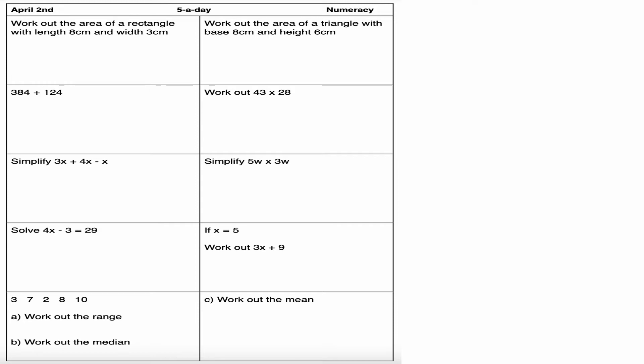Hi, welcome to this video looking at the numeracy five a day for Corbett Maths. We're looking at April the second. We're going to start with question number one: work out the area of a rectangle with length eight centimeters and width of three.